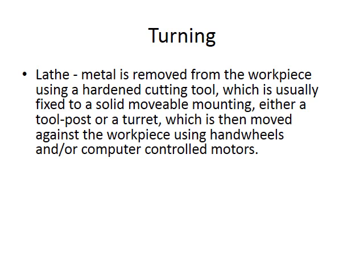I'll start with the more traditional type of metal processing, and this is turning — metal turning, which is done on a lathe. A lathe is a piece of apparatus that allows a metal piece to be worked on using cutting tools. The cutting tools are usually hardened and they're fixed to a solid or movable mounting called a tool post or turret, which is then moved against the work piece. The work piece is mounted in a chuck and is usually rotating, controlled by hand wheels or computer-controlled motors.